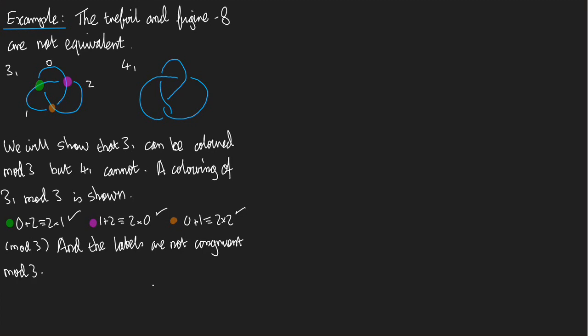So now what's left for us to do, we've shown that 3,1 can be colored mod 3. We need to show that 4,1 cannot be colored mod 3. So let's do that. 4,1 cannot be colored mod 3. For if it could,